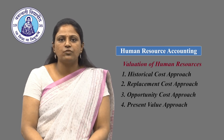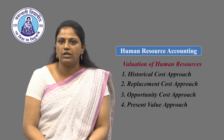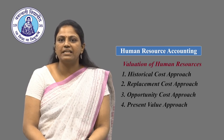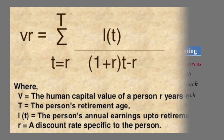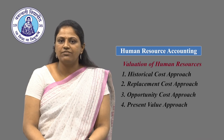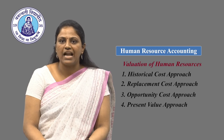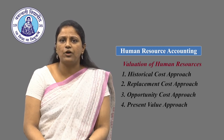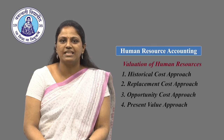Present value approach. In 1971, Lev and Schwartz developed a model named the present value of future earnings model to estimate the value of human resources by determining their present value to the organization. They suggested a formula based on earnings and retirement age of an employee to calculate the value of a human resource till retirement age. However, this approach has limitations: an employee's value cannot be determined by annual earnings alone, which may not remain constant over time and should not be considered as the real worth of the employee. The model also ignores the possibility of an employee leaving the organization and considerations such as skill improvement, experience, and bargaining capacity.